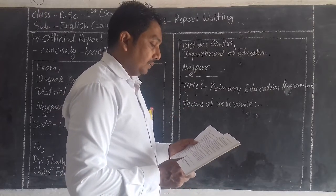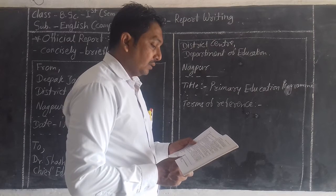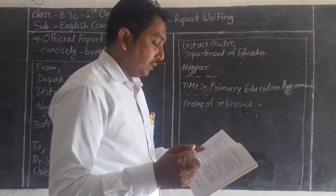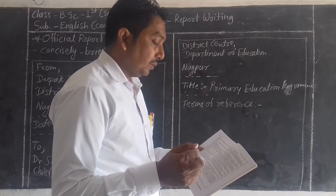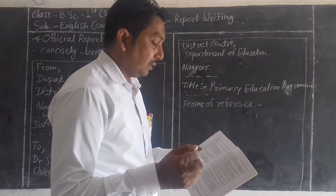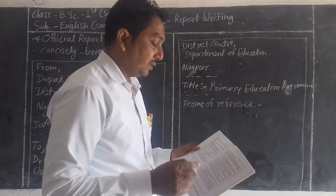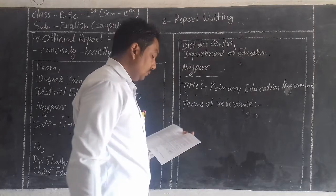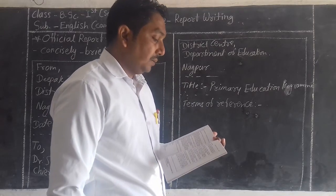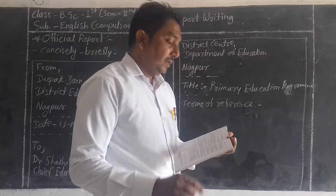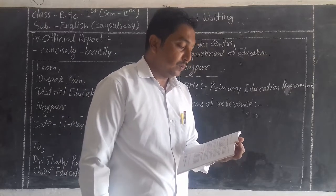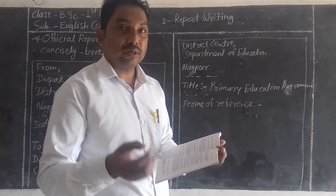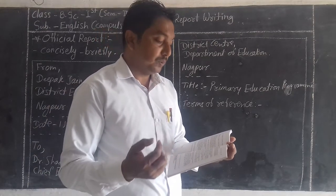After that comes the body of the report, which contains the findings of the investigation. After that comes the conclusion, in which we write the interpretation of the facts along with the writer's comments, and finally the signature of the person. In the findings section, we describe how the survey was done and what kind of information was gathered.